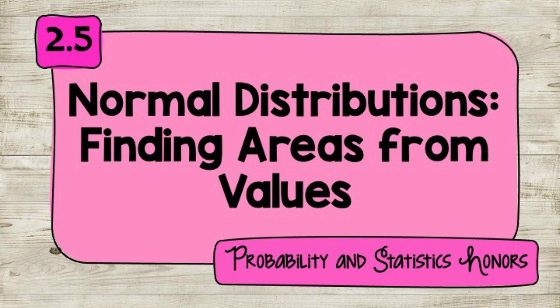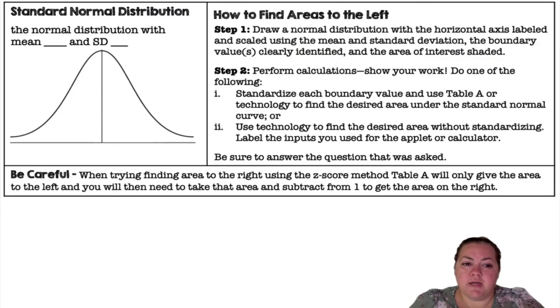Hey there students, it's Ms. Adams. In this video we're going to learn about using normal distributions to find areas from values. We have a standard normal distribution - the normal distribution with a mean of 0 and a standard deviation of 1 will give you all your z-scores.